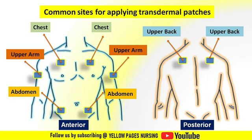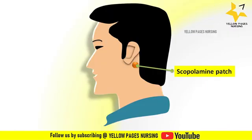Certain patches are placed behind the ear. For example, scopolamine comes as a patch to be placed on the hairless skin behind the ears, which prevents nausea and vomiting due to motion sickness, anesthesia, and surgery.